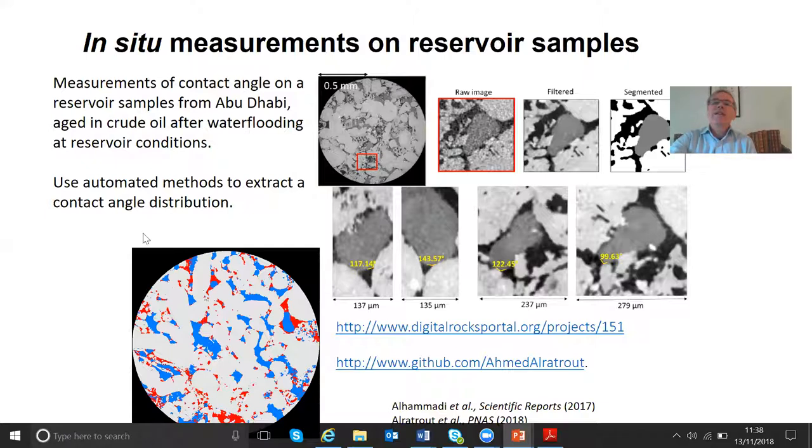But now it's the oil that's the wetting phase. So the oil is now clinging to the nooks and crannies of the pore space, in the little pores where it likes coating the surface. The water goes into the centers of the bigger pores, the water in blue. And now if we blow up the image, this is the raw image.